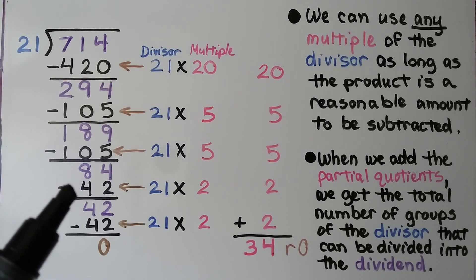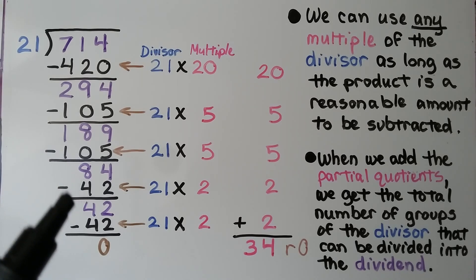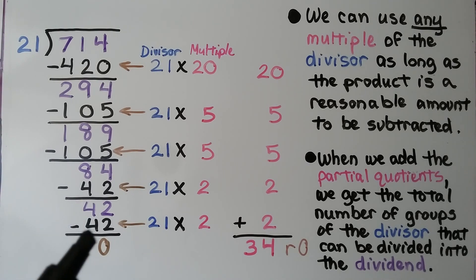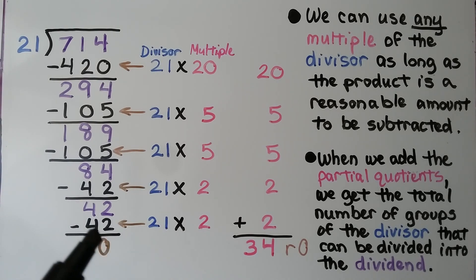We try 21 times 2, which is 42. We subtract it and get 42. We do another 21 times 2, subtract it, and get 0.